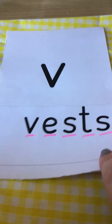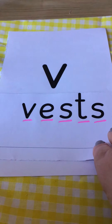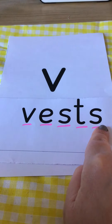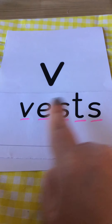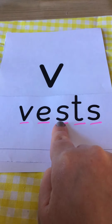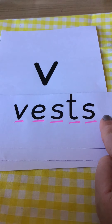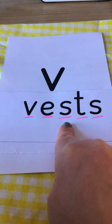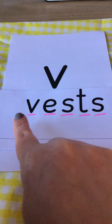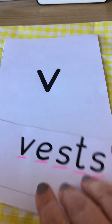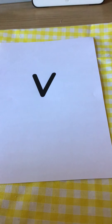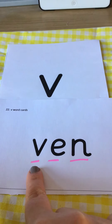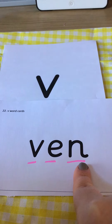Let's finish with a tricky word. This one's a bit longer. Let's see if we can do it together. V-a-p, vap. Let's try again. V-a-p, vap. Your turn. V-a-p, vap. Well done.